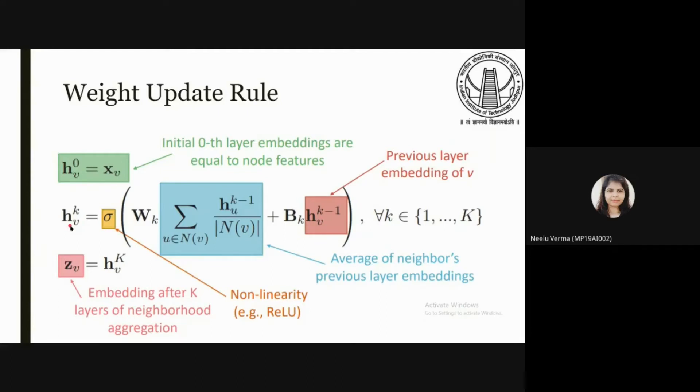For K equals 1 to K minus 1, we will use the second equation. And for the last layer we have the vector Z of A equal to HV of K. This is basically the implementation of forward propagation in case of graph neural networks.